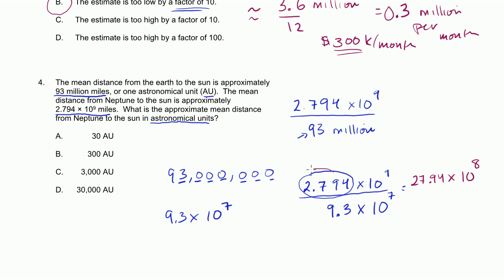If we multiply this part by 10, we would have to divide this part by 10 in order to not change the number. So we get 27.94 times 10 to the eighth, divided by 9.3 times 10 to the seventh.